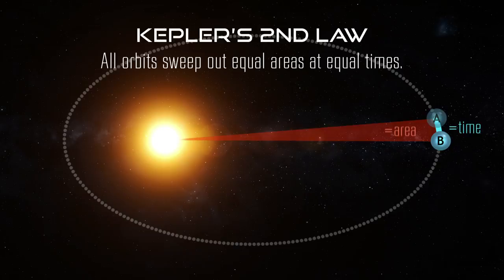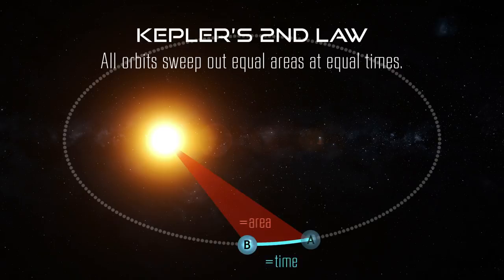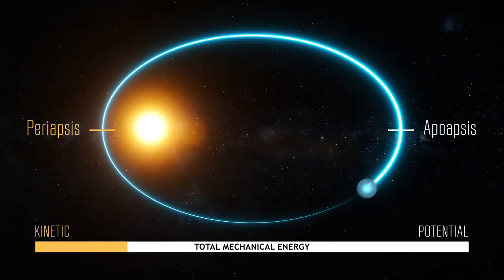Kepler's second law states that all orbits sweep out equal areas at equal times. With the second law, Kepler was observing that mechanical energy is conserved. Mechanical energy is the sum of both potential and kinetic energy. Potential energy deals with distance, and kinetic energy deals with speed or velocity.